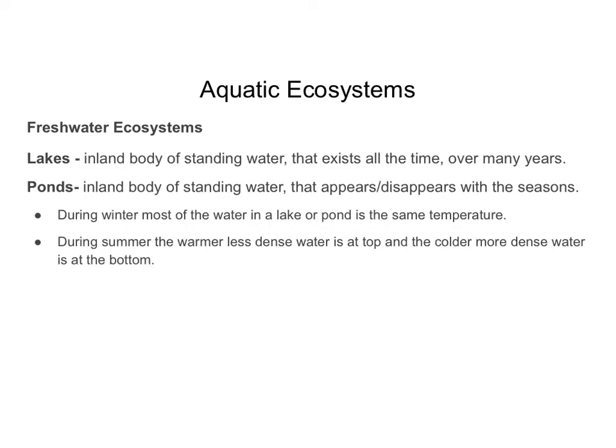Lakes and ponds are both inland bodies of standing water. Lakes exist all the time and persist for many years, whereas ponds can appear and disappear as the seasons change. During winter, most of the water in a lake or pond is the same temperature. During summer, the warmer, less dense water is at the top, and the colder, more dense water is at the bottom.